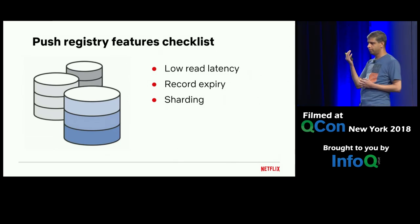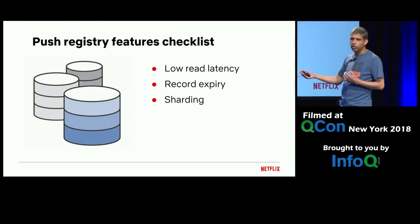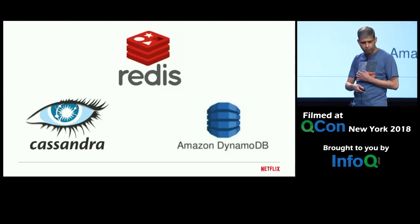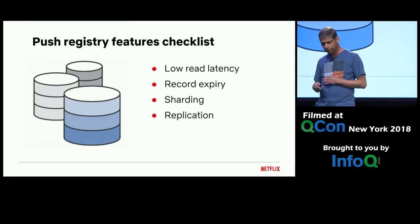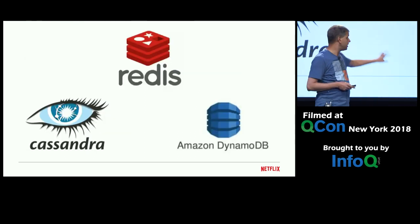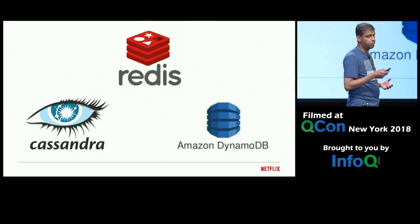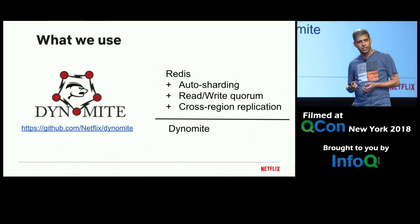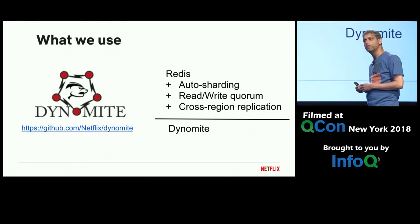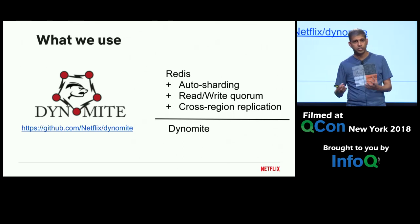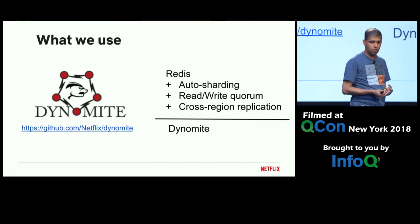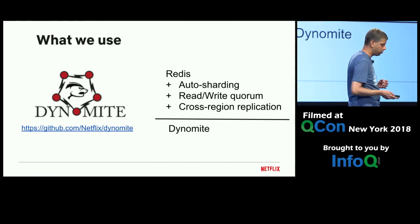Besides these two desirable features, you have a laundry list of usual suspects like sharding for high availability and replication for fault tolerance. Given these features, any of these would be a great choice for your push registry data store. What we use internally is Dynamite. It's yet another open source project from Netflix. It takes Redis, wraps it, and augments it with features like auto sharding, cross-region replication, and read-write quorums. It's another great choice for your push registry.